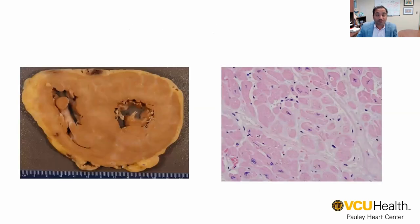When amyloid affects the heart, as shown here on the left, this is a pathological cross-section of someone's heart tissue. You can see the left ventricle and the right ventricle. The heart tissue is very thickened, and you may be able to appreciate this pale substance in the subendocardium, which is the amyloid deposition leading to the thickening of the heart muscle.